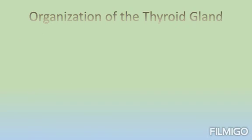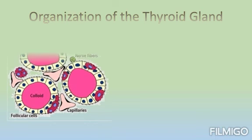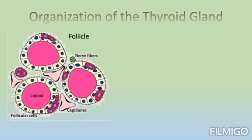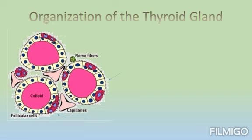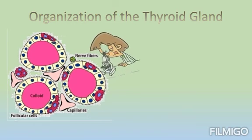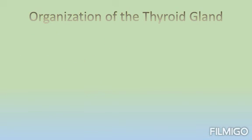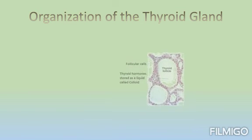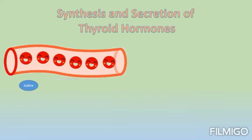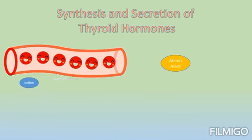Under the microscope, we notice that the thyroid gland consists of units called follicles. As you can see here, we have three follicles. A follicle is made up of structures called follicular cells. If we magnify further to observe the structure of the follicle, a follicle consists of follicular cells, and inside them we have the hormones.